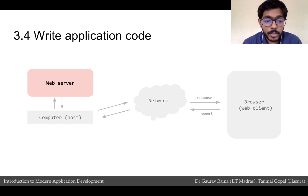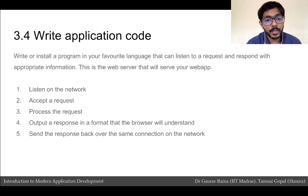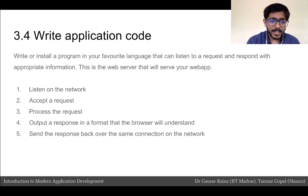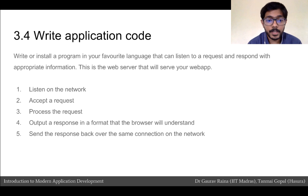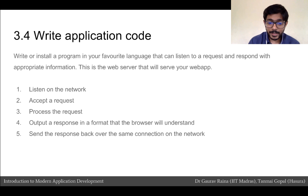The last step is to actually write our application code — the web server on our computer host. We'll have to write or install a program in a language of our choice that can request or respond with appropriate information. This software will be the web server that serves our web app. There are 5 things a web app does: it listens on the network, accepts a request from the network, processes the request, outputs a response in a format the browser can understand, and sends that response back over the same network connection.